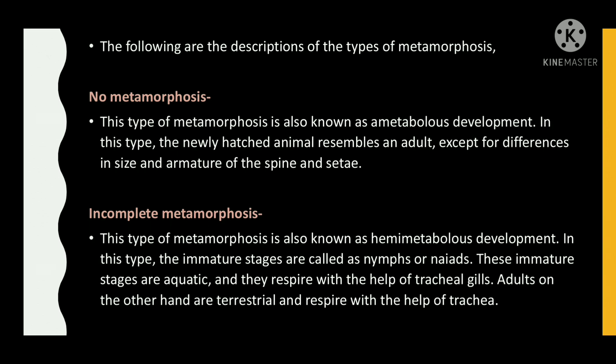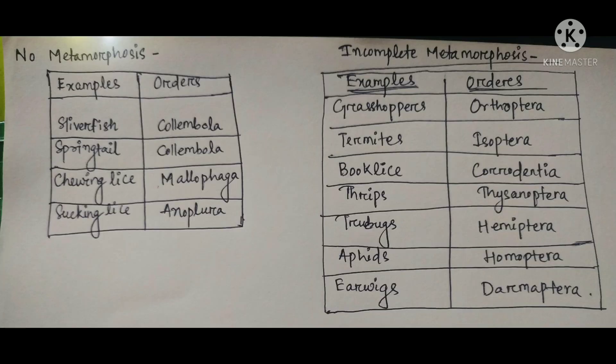Incomplete metamorphosis: this type is also known as hemimetabolous development. In this type, the immature stages are called nymphs or naiads. These immature stages are aquatic and they respire with the help of tracheal gills. Adults, on the other hand, are terrestrial. These are some examples of no metamorphosis and incomplete metamorphosis.